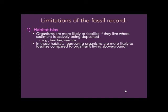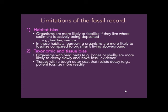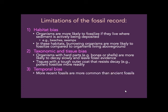Several biases limit what fossils you're likely to find. Habitat bias: you're more likely to find fossils from organisms that lived in areas where sediment is being deposited, like beaches and swamps, and organisms that live below ground are more likely to be buried. Taxonomic and tissue bias: hard, crunchy organisms decay more slowly and are more likely to leave fossils than soft, squishy ones. Tough outer coats like pollen tend to fossilize more easily.